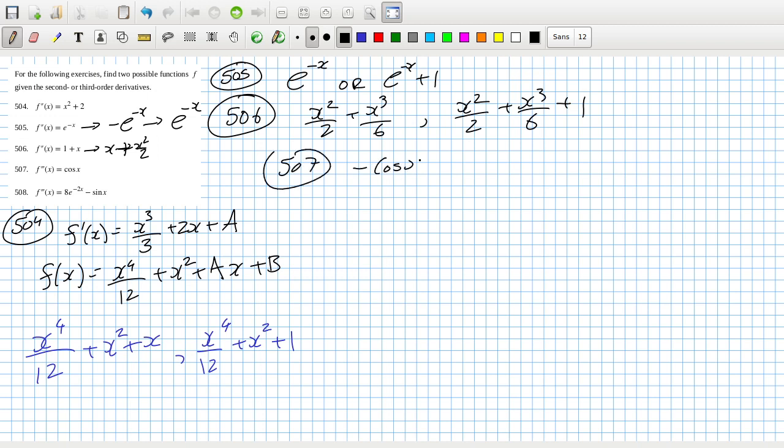That would be minus cos x because minus cos x becomes sine x becomes then cos x, or guess what I'm going to do, put a plus 1 at the end. Oh hang on, is that three derivatives? I have to be careful now, not two derivatives. So cos becomes sine, sine becomes minus cos, and minus cos becomes minus sine. So I'm going to say minus sine x or minus sine x plus 1. And then 508: